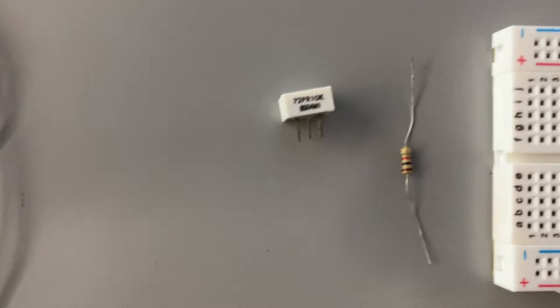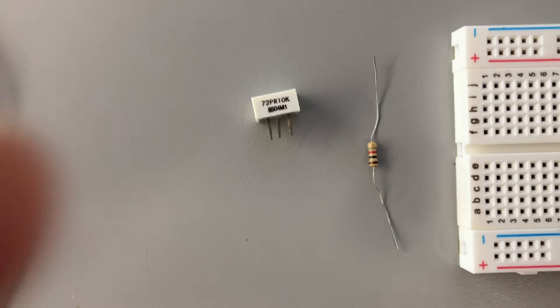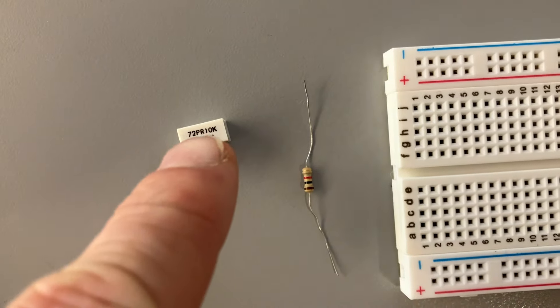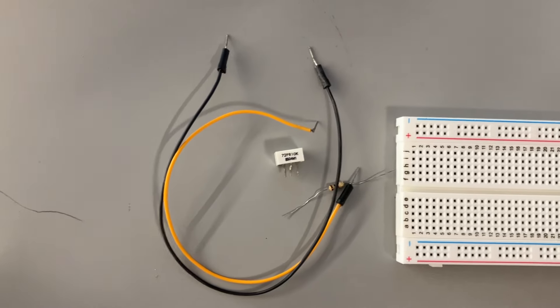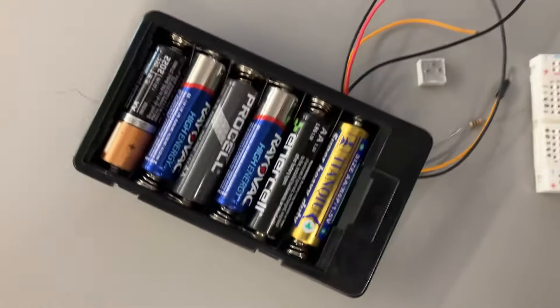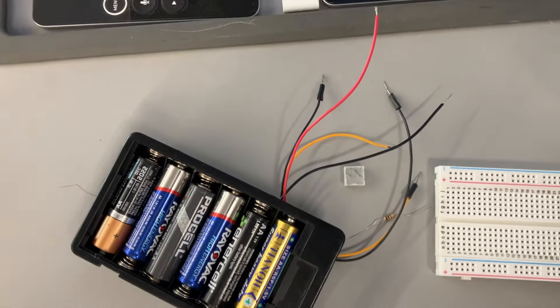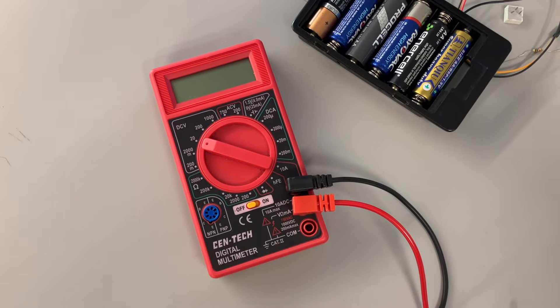I know that's a 10,000 ohm potentiometer because it says 10K at the very end of the writing right there. Two jumper wires, so these ones will make electrical connections, a battery pack that looks like this, and a multimeter which looks like this.